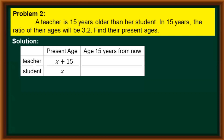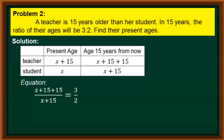If the present age of the student is x, her age after 15 years would be x plus 15. And if the teacher's present age is x plus 15, her age 15 years from now would be x plus 15 plus 15. We now create our equation, focusing on the third column. The ratio of their ages in 15 years will be 3 is to 2, where the three parts represent the teacher's age and the two parts represent the student's age. So our equation is: the teacher's age, x plus 15 plus 15, over the student's age, x plus 15, equals 3 over 2.